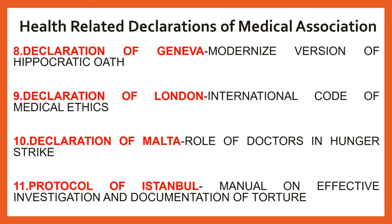The Declaration of Geneva is a modernized version of the Hippocratic Oath. The Declaration of London serves as the International Code of Medical Ethics. The Declaration of Malta addresses the role of doctors in hunger strikes. Lastly, the Protocol of Istanbul consists of the manual on effective investigation and documentation of torture.